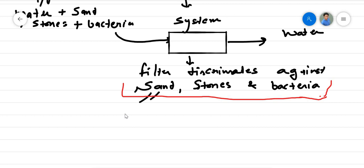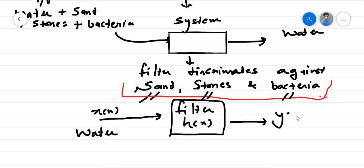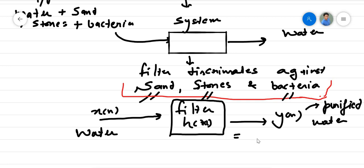So in our terms, this particular filter has some function — we see it as h(n). And if we provide an input x(n) — in this case it is water — then we will receive an output y(n), that is purified water. This combination of the input going through the filter leading to y(n) is what we already know in digital signal processing: that is x(n) convolution h(n).